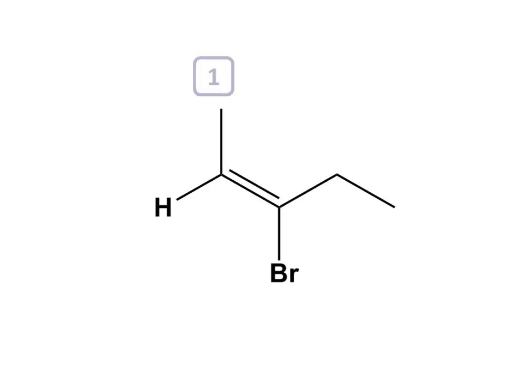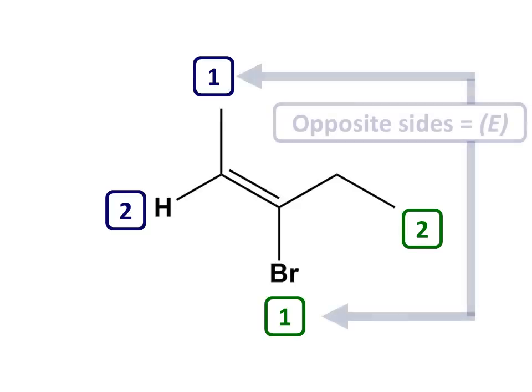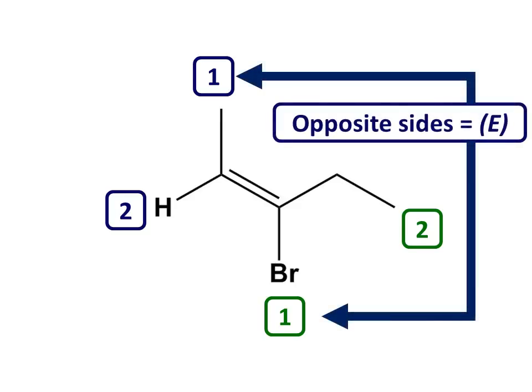Finally, the contrasting situation, where the two higher priority groups are on opposite sides of the alkene. Assigning priorities as before: methyl higher priority than hydrogen on the left, bromine higher than ethyl at the right-hand carbon. Now the two higher priority groups — the methyl group at the left-hand carbon and the bromine at the right-hand carbon — are on opposite sides. This is the Eingegen, or E stereoisomer.